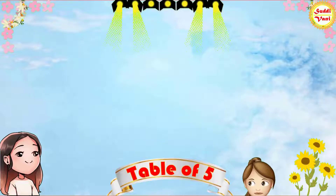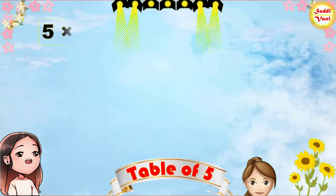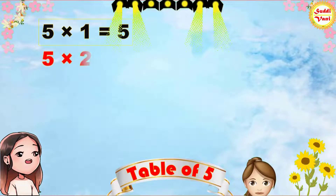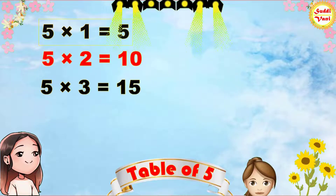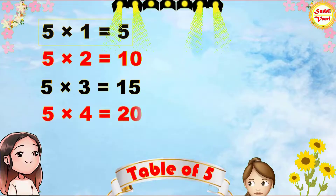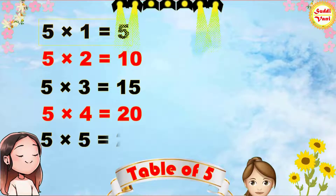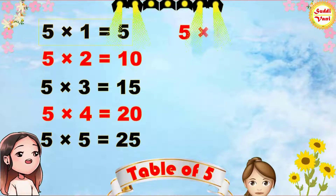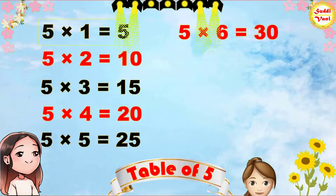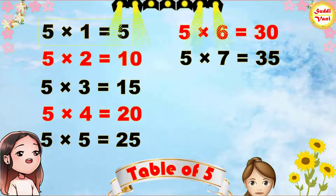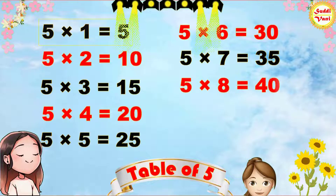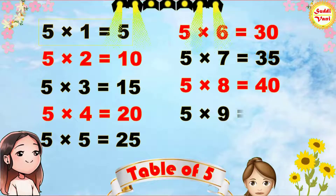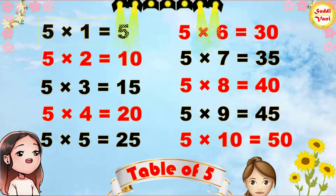Once again: 5 1s are 5, 5 2s are 10, 5 3s are 15, 5 4s are 20, 5 5s are 25, 5 6s are 30, 5 7s are 35, 5 8s are 40, 5 9s are 45, 5 10s are 50.